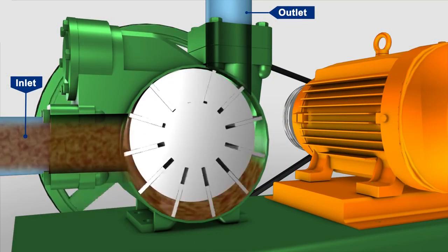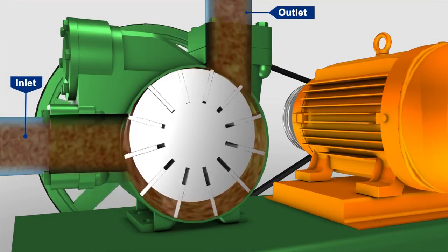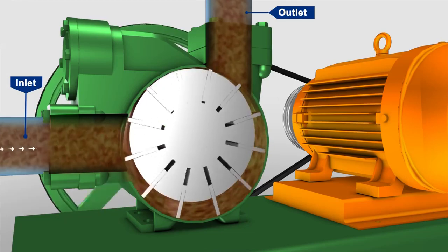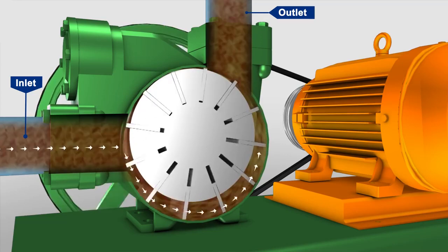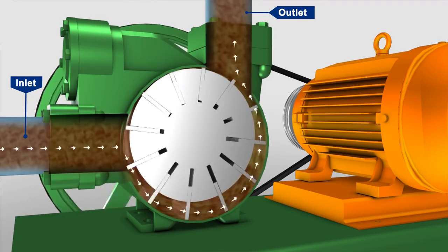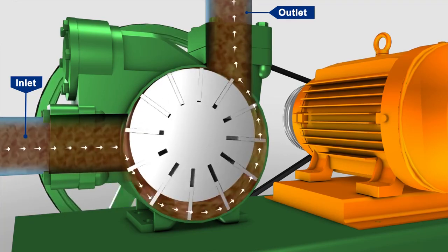The pistons draw in fluid during half a revolution and drive fluid out during the other half. The greater the ring eccentricity is, the longer the pistons stroke and more fluid they transfer.